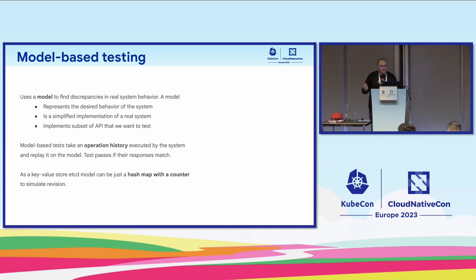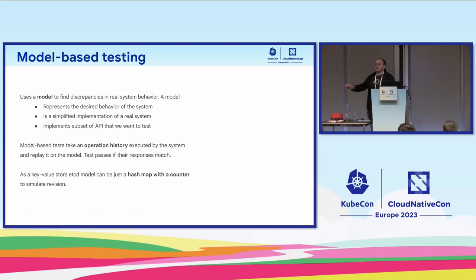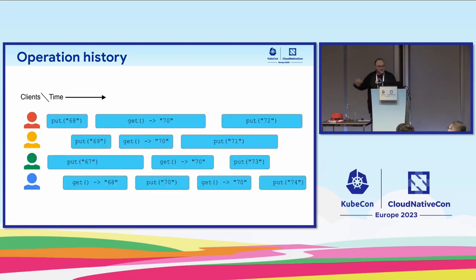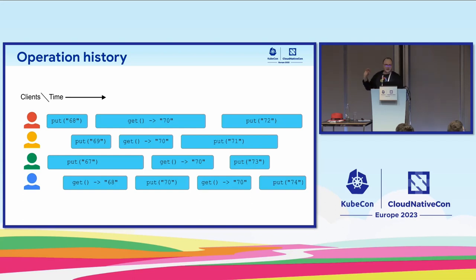Model-based testing requires us to collect operation history from the real system and replay it on the model. If the model represents the correct and desired behavior of the system, replaying the history should tell us whether the system is behaving as it's supposed to. For etcd — it's a key-value store — why can't we just use a hash map with a counter? But there's another problem: we have a set of requests executed by multiple users with concurrent requests.